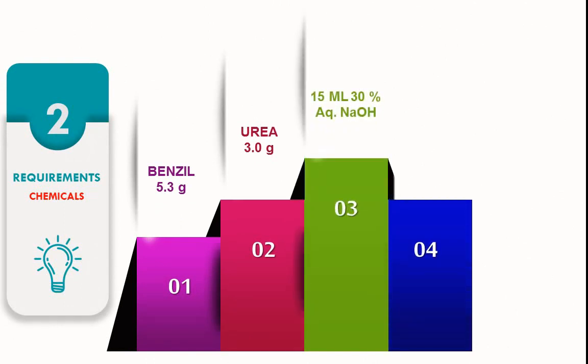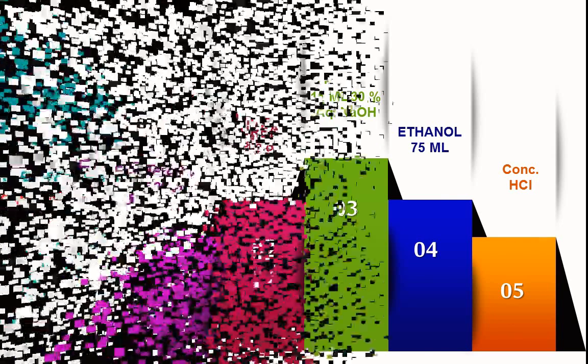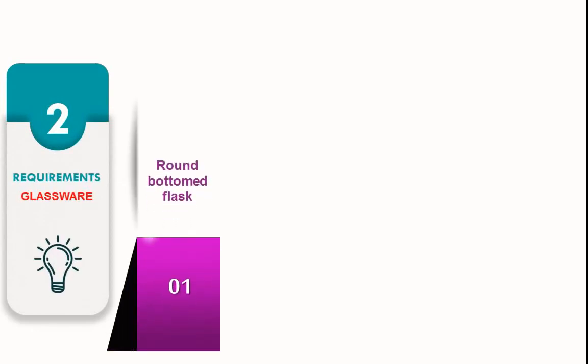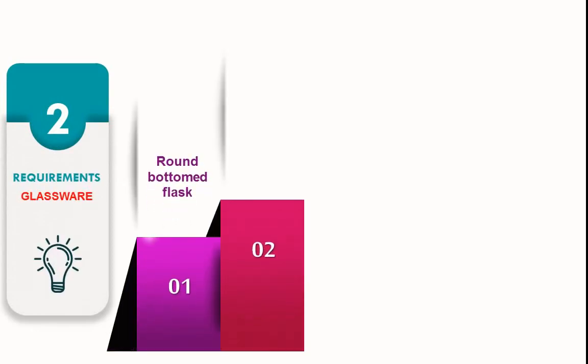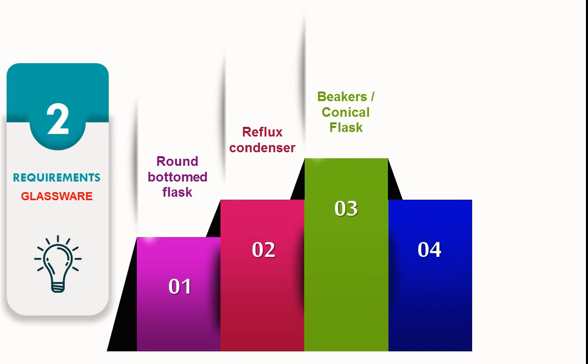The glassware required is round bottom flask (RBF), reflux condenser, beaker, conical flask, glass rod, and funnel. Next is the vacuum pump or suction pump.